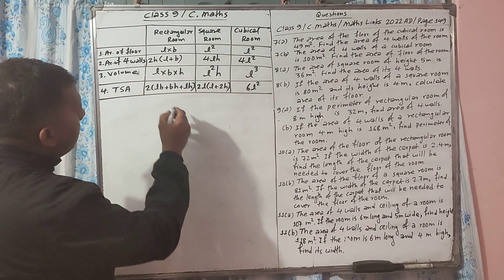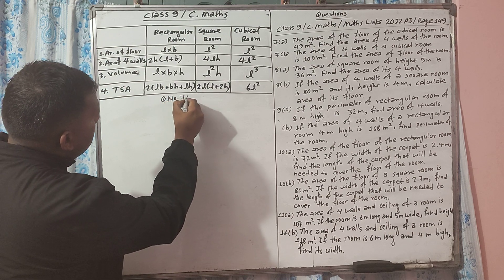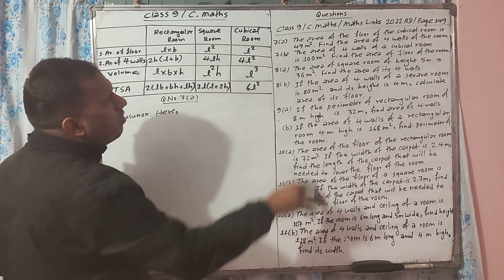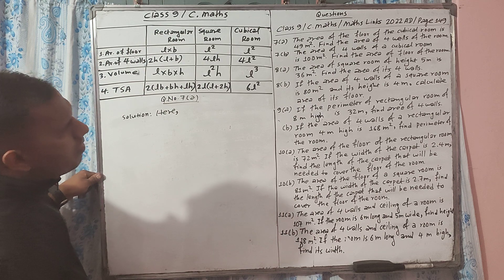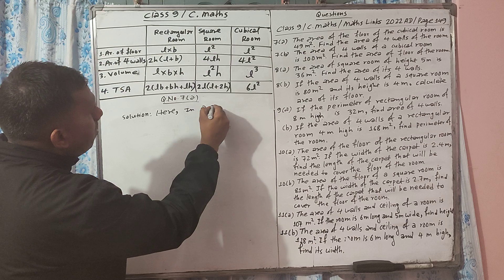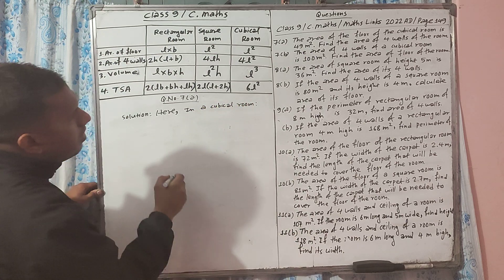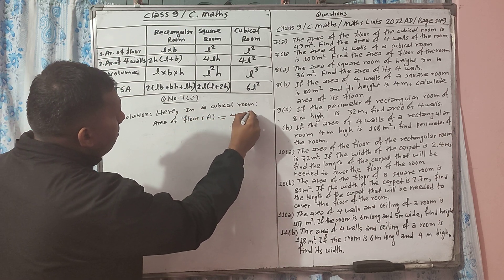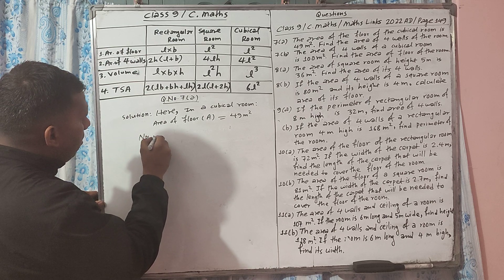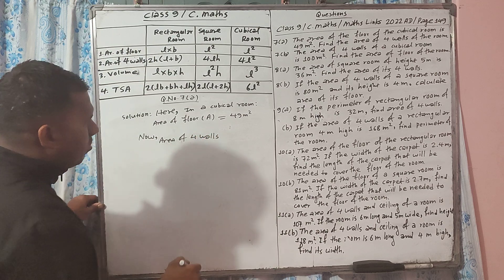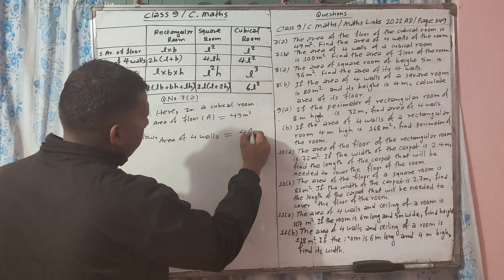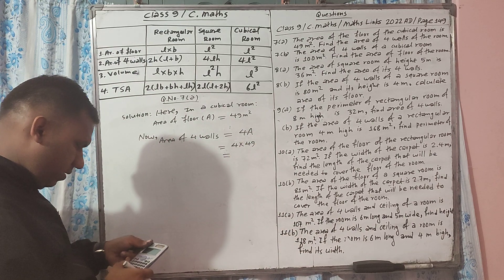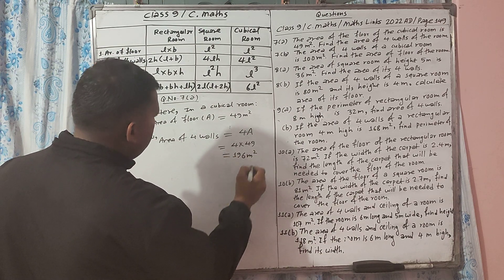Let's start from question number 7a. The area of the floor of a cubical room is 49 meter square. We need to find the area of four walls. In a cubical room, area of four walls equals four times the area of the floor, which is four times 49 meter square.